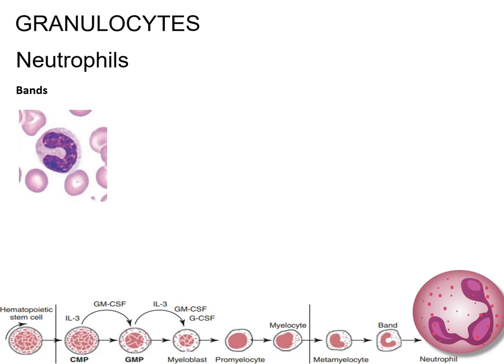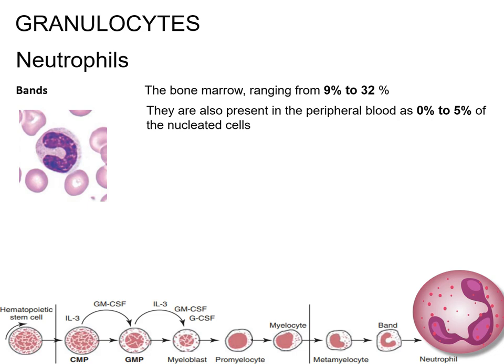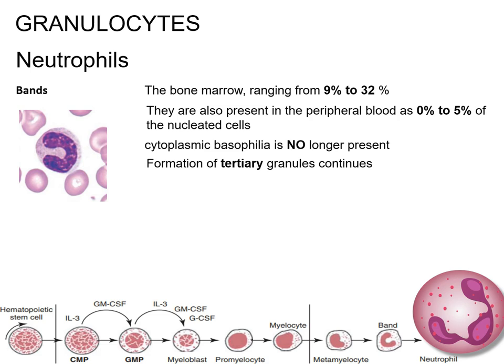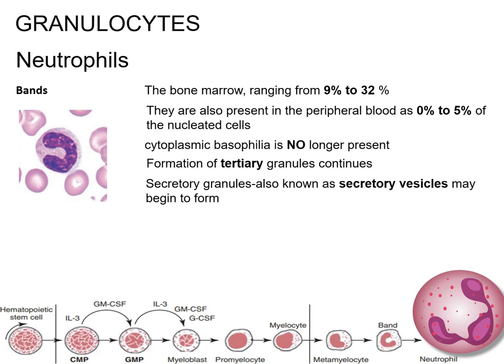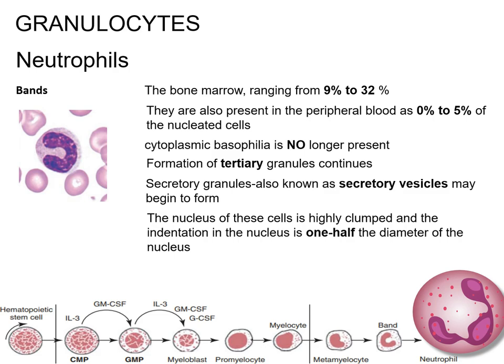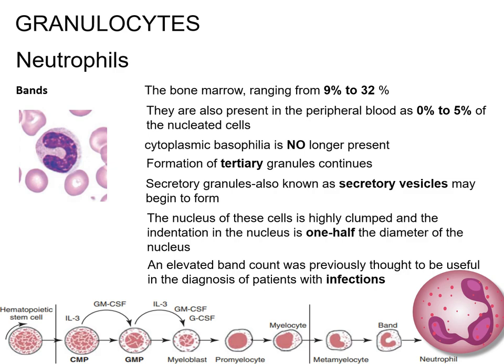Bands constitute 9–32% of the nucleated cells in the bone marrow and are also present in the peripheral blood as 0–5% of nucleated cells. During this stage, cytoplasmic basophilia is no longer present and the formation of tertiary granules continues. Additionally, secretory granules, also known as secretory vesicles, may begin to form. The nucleus is highly clumped and the indentation, which began in the previous stage, now represents one-half the diameter of the nucleus; however, actual segmentation has not yet occurred. An elevated band count was previously thought to be useful in the diagnosis of patients with infections.